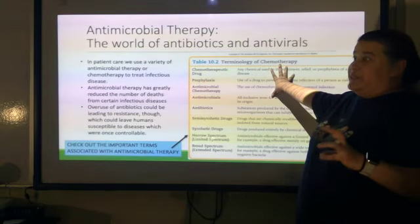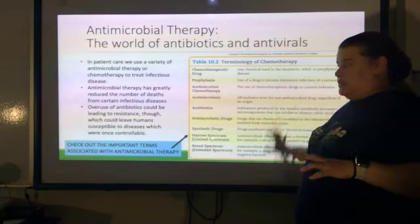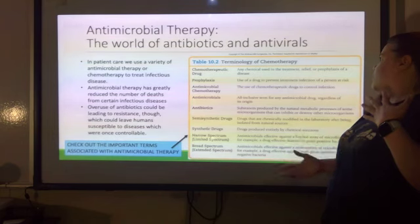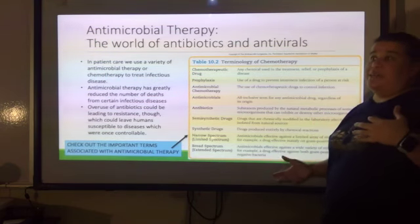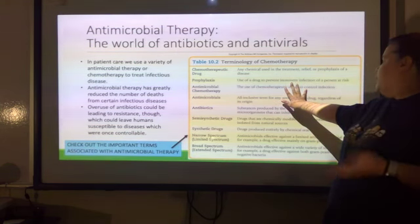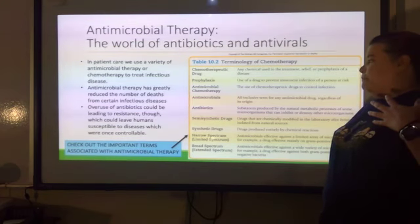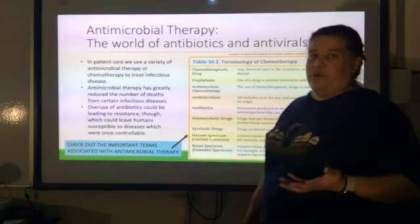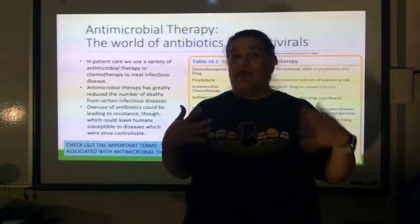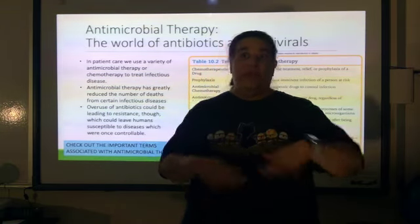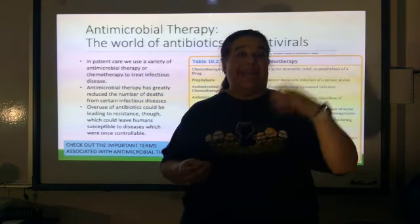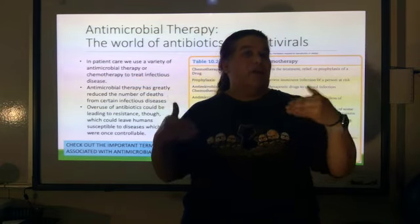Chemotherapeutic drugs are any chemical used in the treatment, relief, or prophylaxis of a disease. Prophylaxis means prevention — a drug to prevent an imminent infection in a person at risk. You can think of a vaccine as a prophylaxis: we aren't giving you the disease, but we're getting your immune system ready. That doesn't mean you won't get sick at all, but if you do, it'll be less severe because your immune system has a head start.